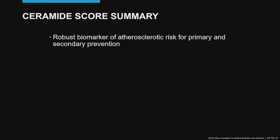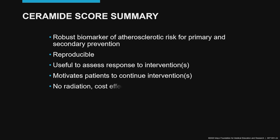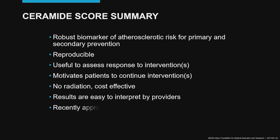In summary, the ceramide score is a robust biomarker of atherosclerotic risk used for primary and secondary prevention. It is a reproducible test, useful to assess response to interventions. It motivates patients to continue the intervention because we can show the ceramide score before and after, and see how that score decreases in parallel with cardiovascular risk. There is no radiation involved. It's a very cost-effective test. Results are easy to interpret — simple numbers that place the patient in a stratum of cardiovascular risk. And ceramides have been recently approved for reimbursement by insurance companies.